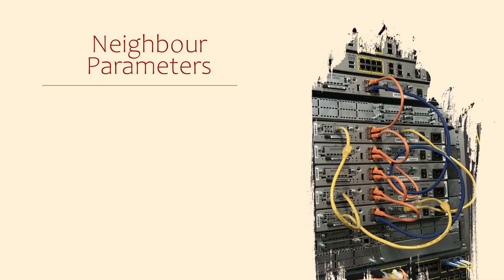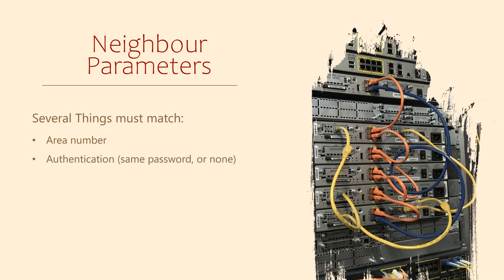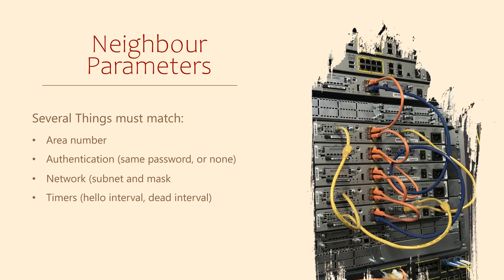There's one last thing about forming adjacencies. Routers use hello messages to share information about themselves, and there are a few details in these messages that must match before neighbors will form. These include being in the same area, having the same authentication details or no authentication, connected interfaces must match with the same network and subnet mask, timers — how often hello messages are sent as well as the dead interval — and the MTU of the connected interfaces. That last one has caught me out a few times in the real world.